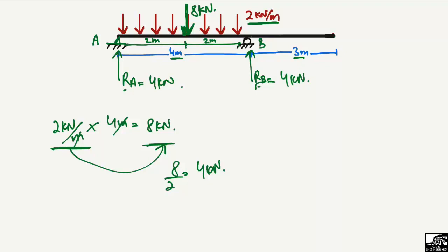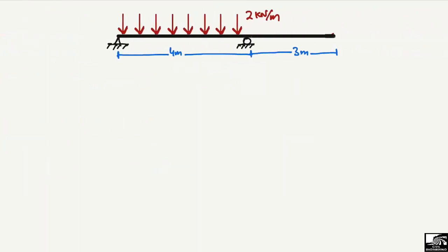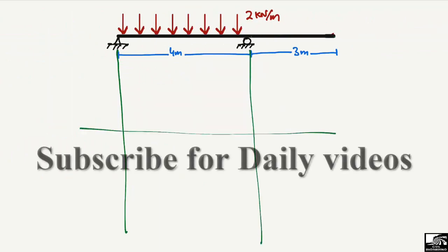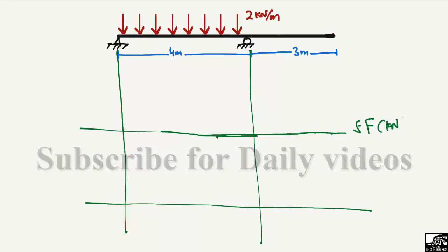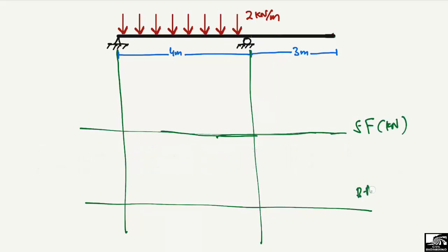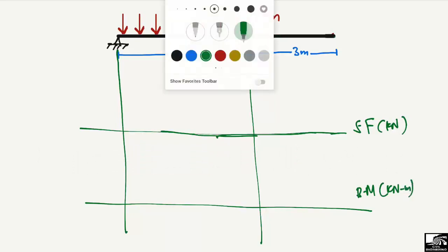Now to draw the shear force and bending moment diagram, we first draw the reference lines. Here are the reference lines for the shear force in units of kN, and here are the reference lines for the bending moment in units of kN·m.